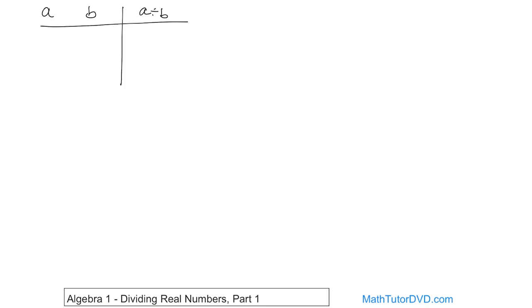If you have a number A and a number B and you want to figure out the sign of A divided by B, it's a very simple process with just a couple of cases. If both are positive, you get a positive. If both are negative, you still get a positive. If one is negative and the other is positive, you get a negative.